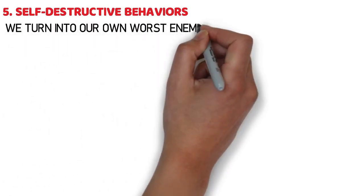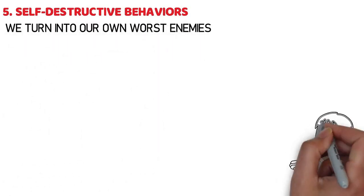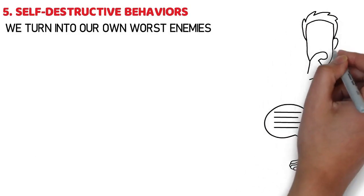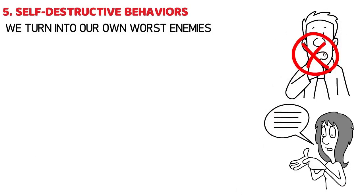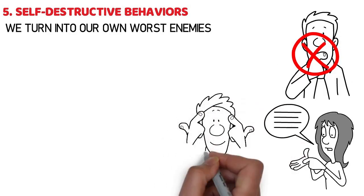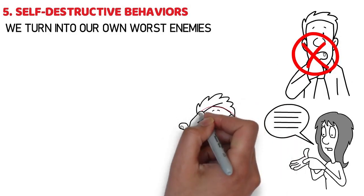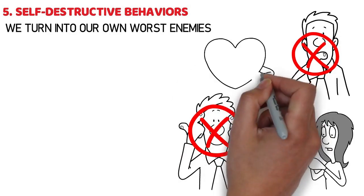Number 5: Self-Destructive Behaviors. Sometimes we turn into our own worst enemies. After facing constant criticism and feeling boxed in, you might start doing things that aren't really you. You're not actually trying to harm yourself, it's more like you're trying to deal with the pain in a way that, honestly, doesn't help much in the long run.